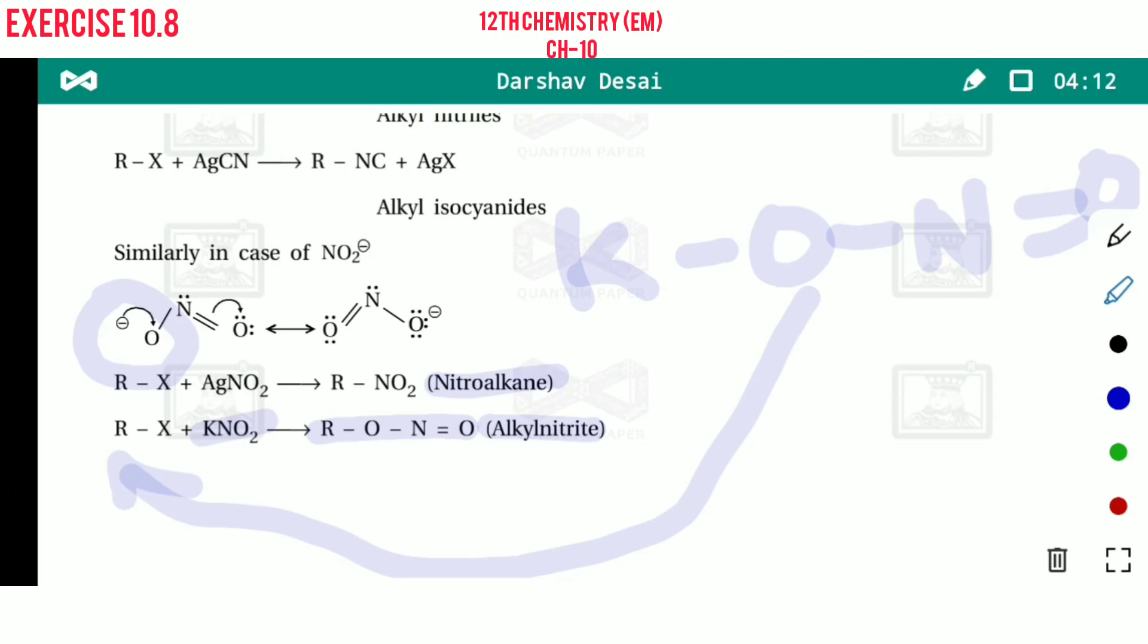If nitrogen acts as a nucleophile, then R-NO2 is formed. So in presence of AgNO2, nitroalkane is formed, and in presence of KNO2, alkyl nitrite is formed.